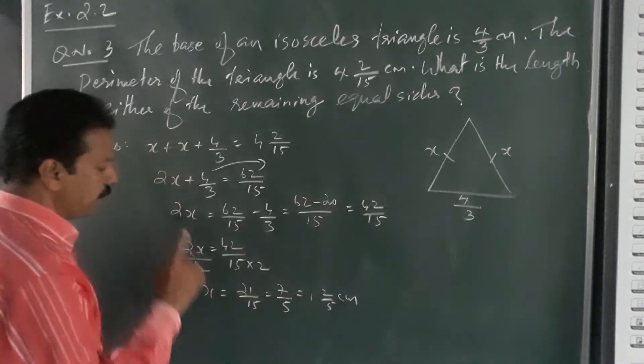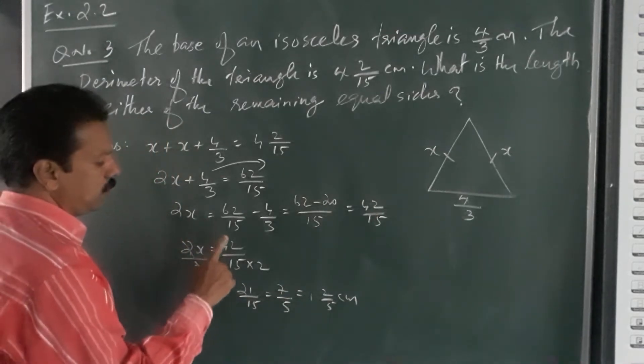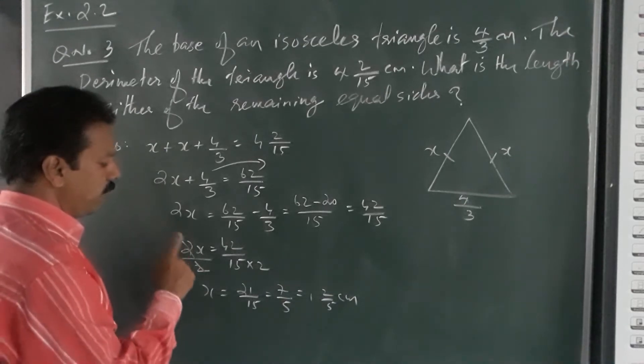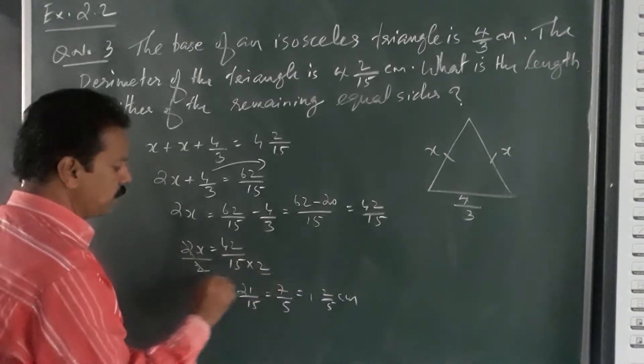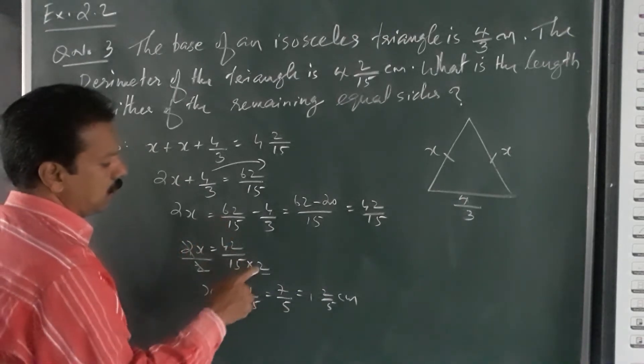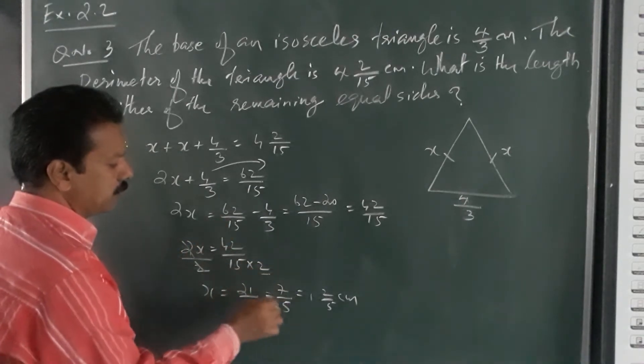2x is equal to 42 by 15. To remove this 2, apply division rule, divide both sides by 2. 2s cancel, x is equal to, then this 2 goes into the denominator.